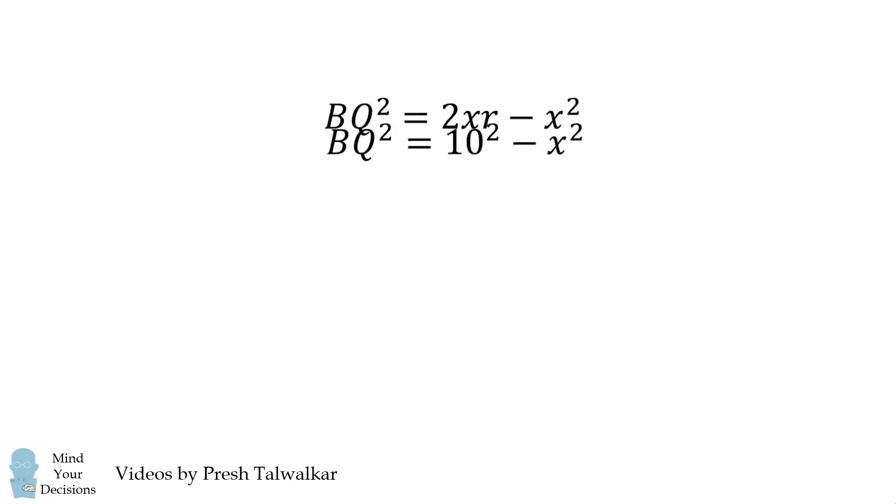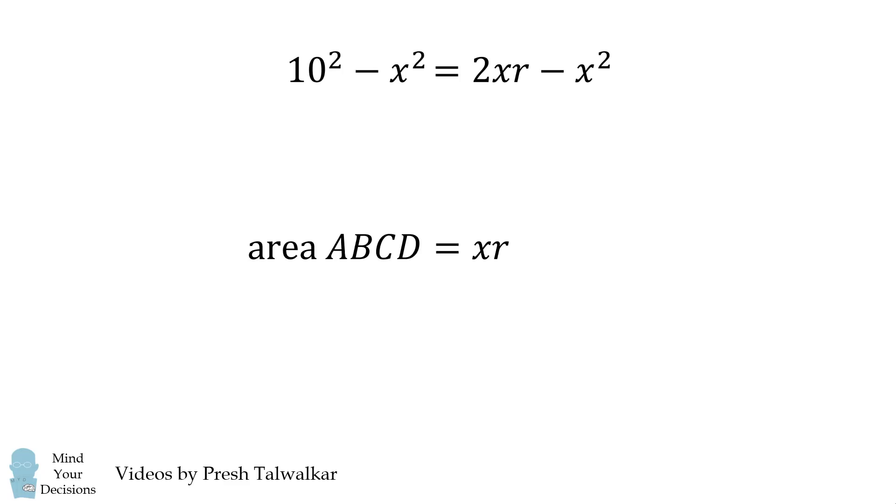We thus have two equations for BQ squared. We can set them equal to each other. Now recall, we want to solve for the area which is X multiplied by R.